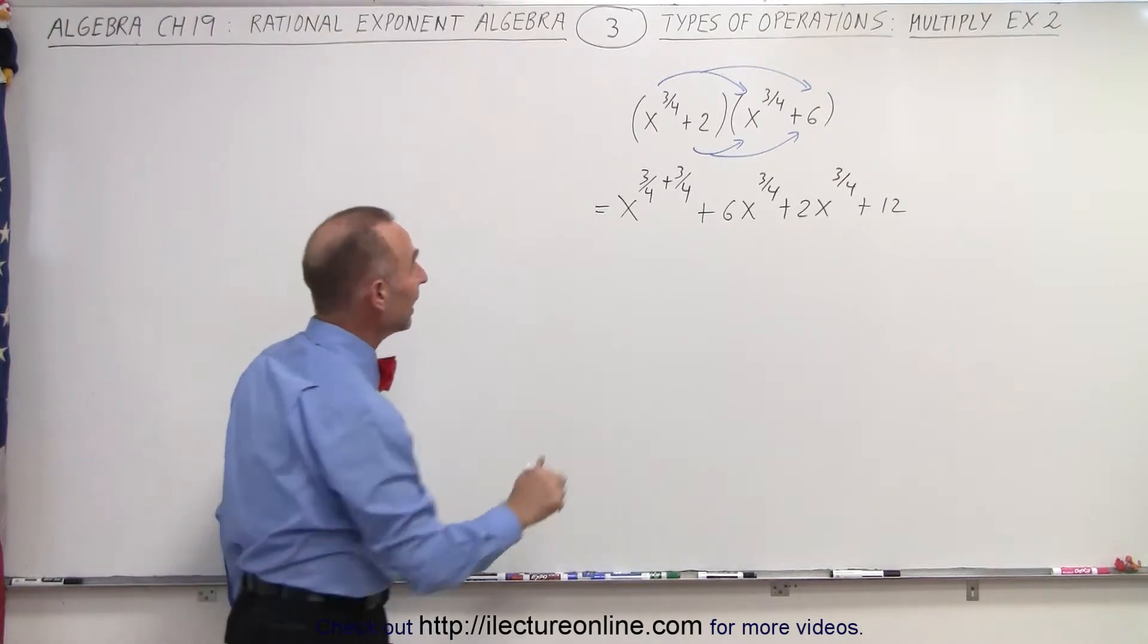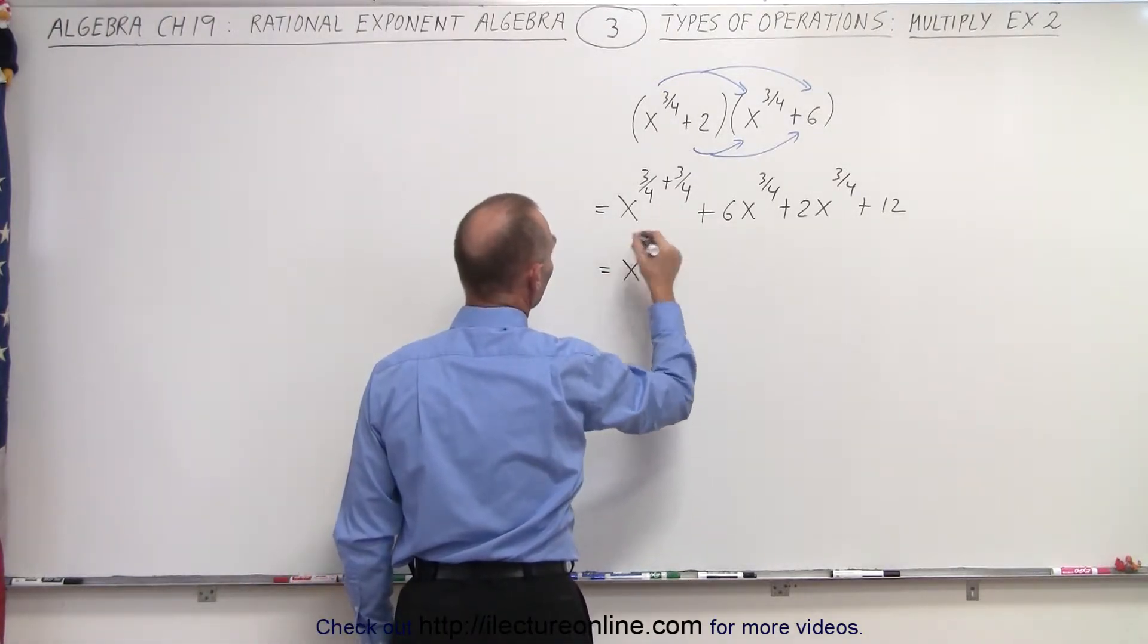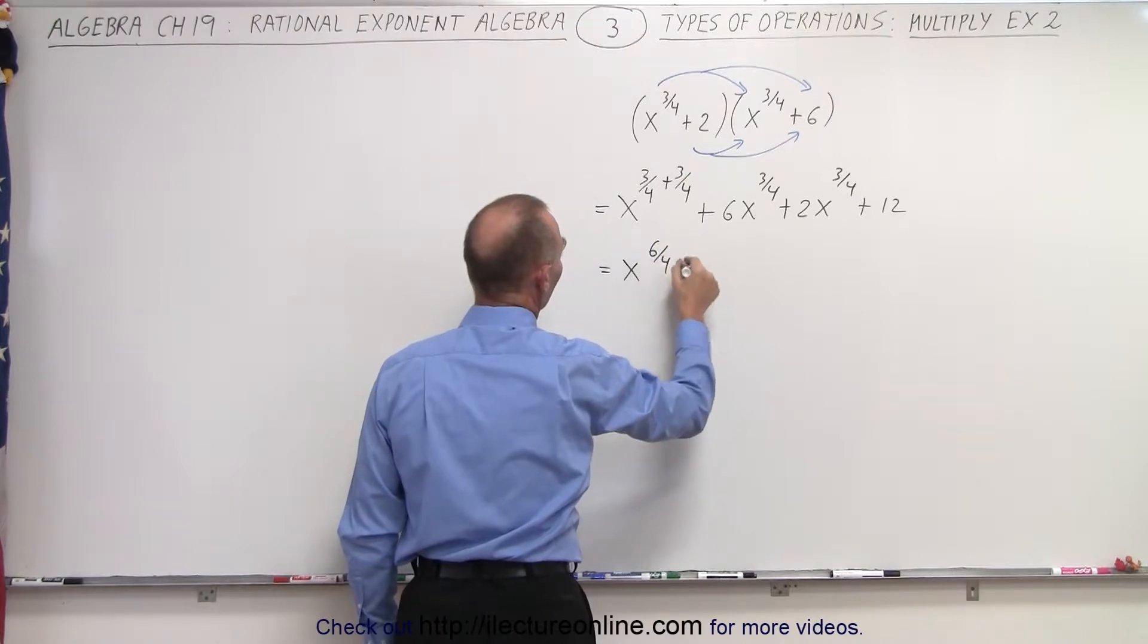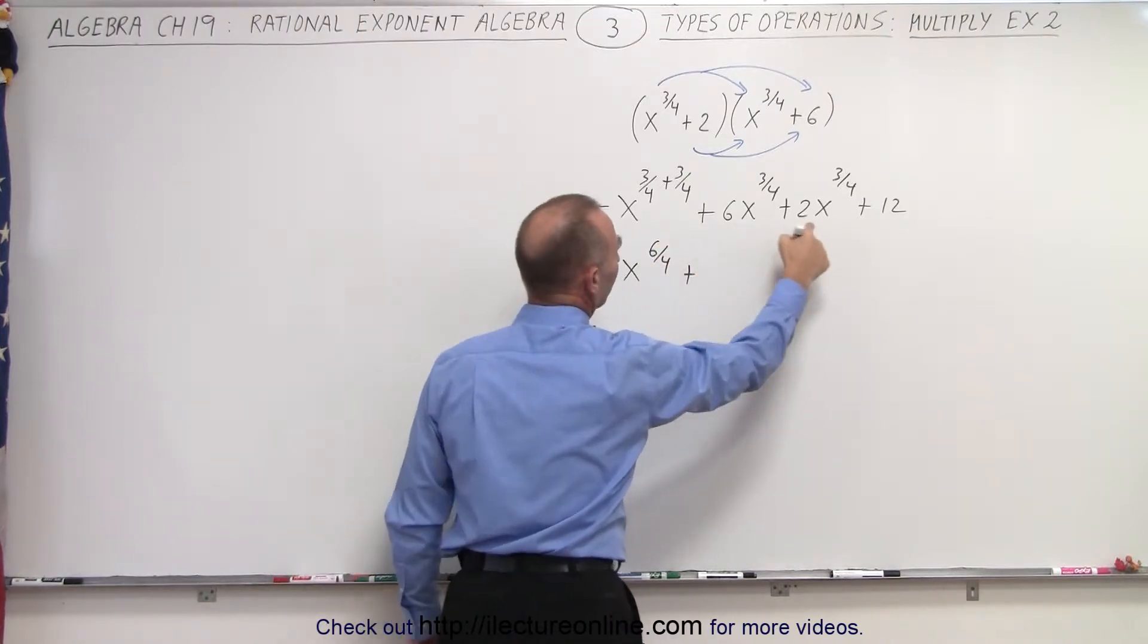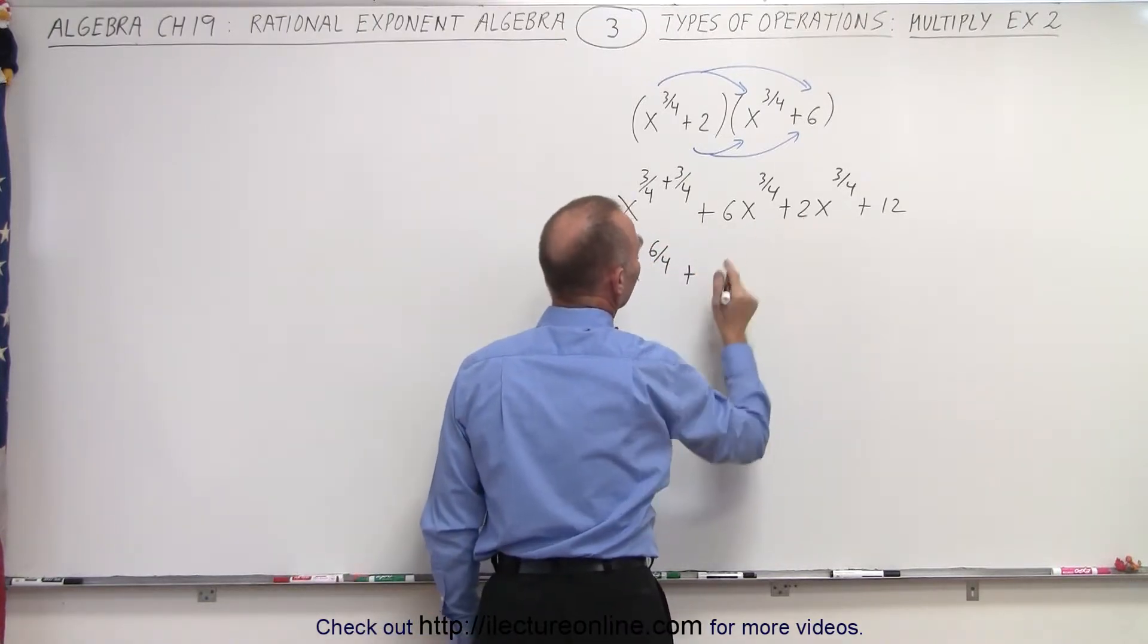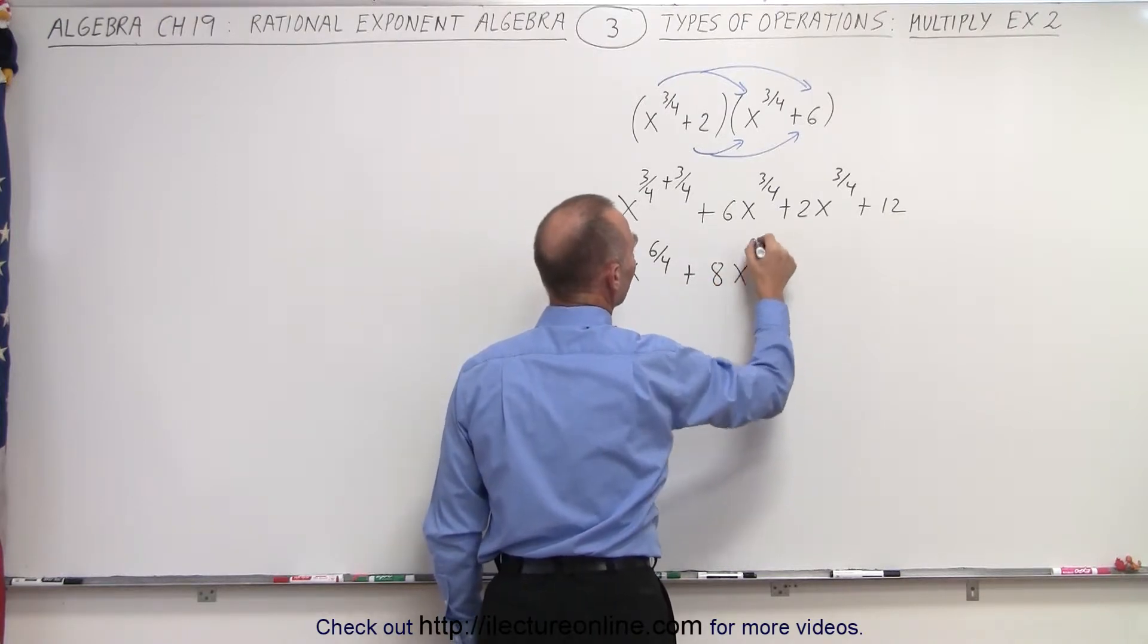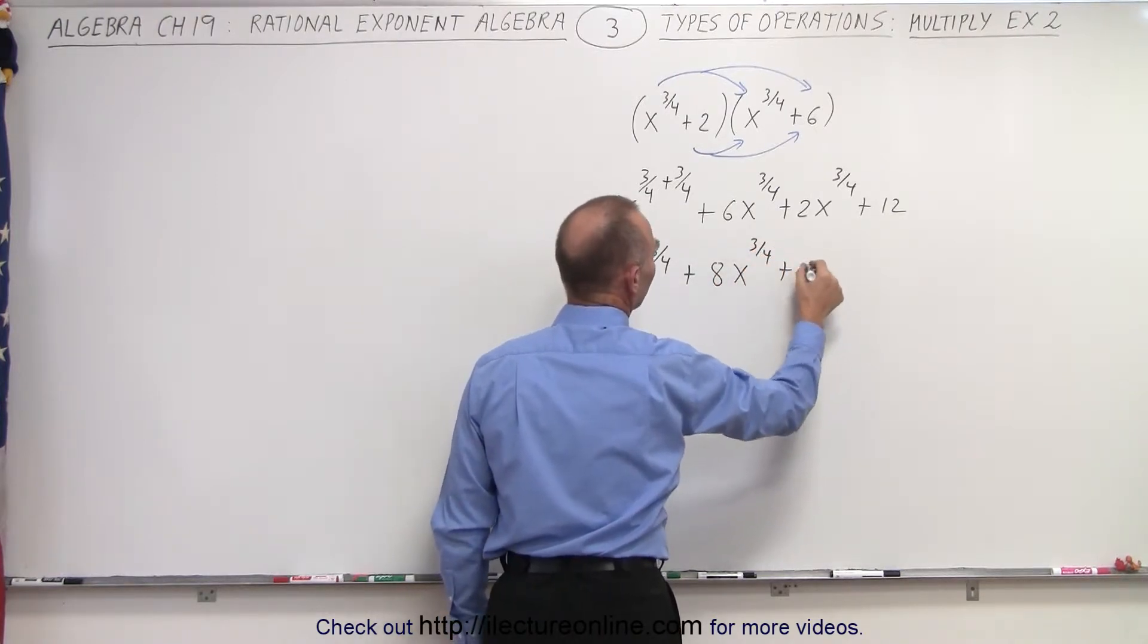Now we can go ahead and add the exponents. So this is equal to x to the 6 fourths, plus here notice the two terms are alike, so we can add them together. So this is 6 plus 2 is 8x to the 3 quarters, and then plus 12.